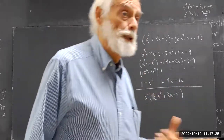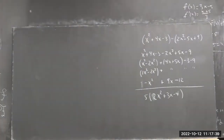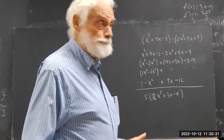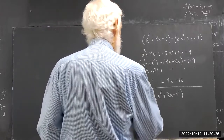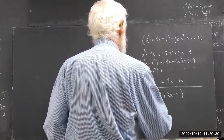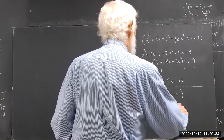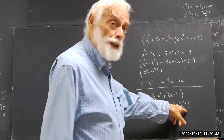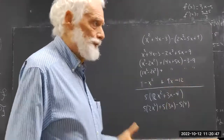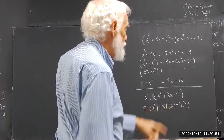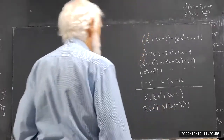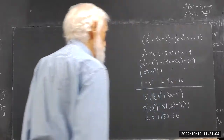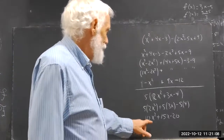What's 5 times 2x squared plus 3x minus 4? To do this one you apply the distributive law. So this is going to be 5 times 2x squared, plus 5 times 3x, minus 5 times 4. Officially it's plus 5 times negative 4, so it'd be plus negative 20, but it still comes out negative 20. That gives us 10x squared plus 15x minus 20.